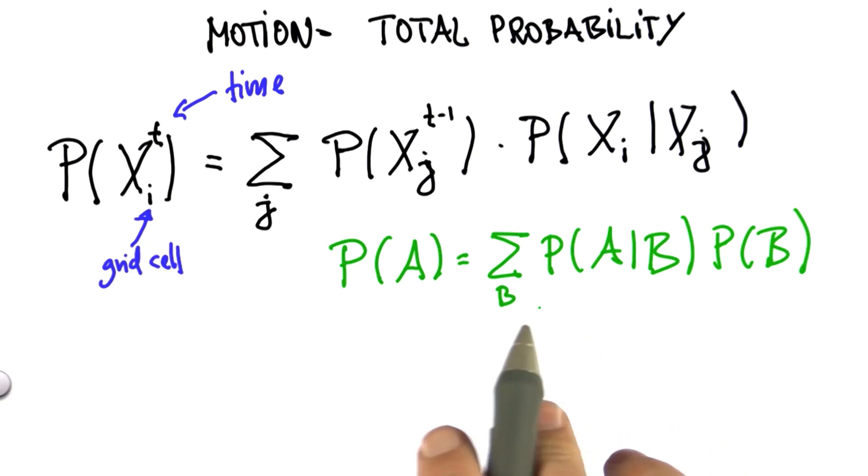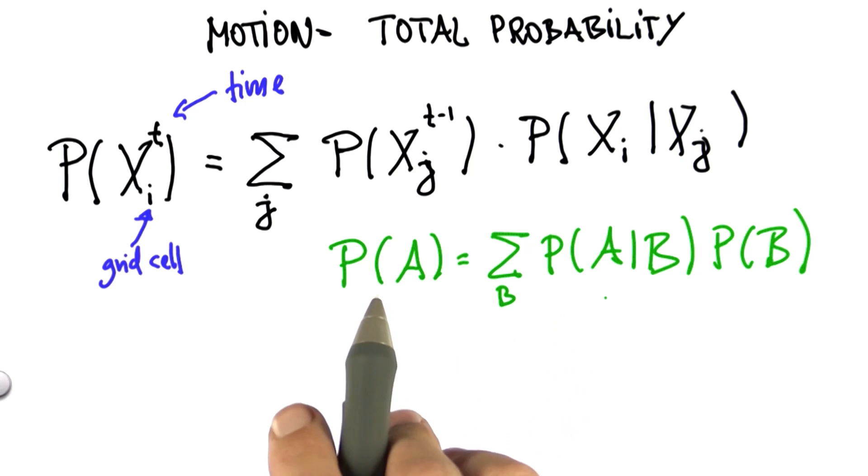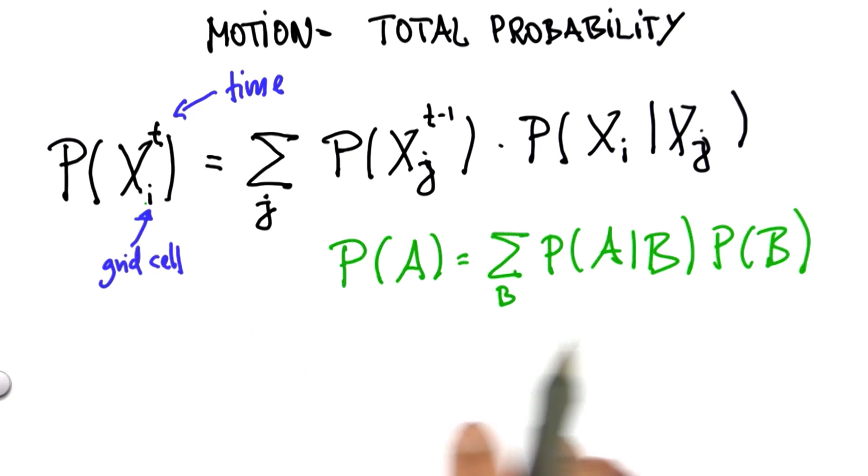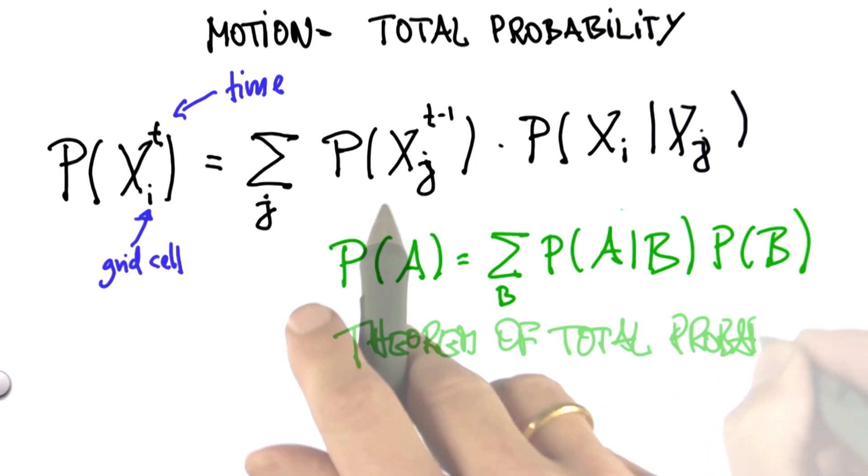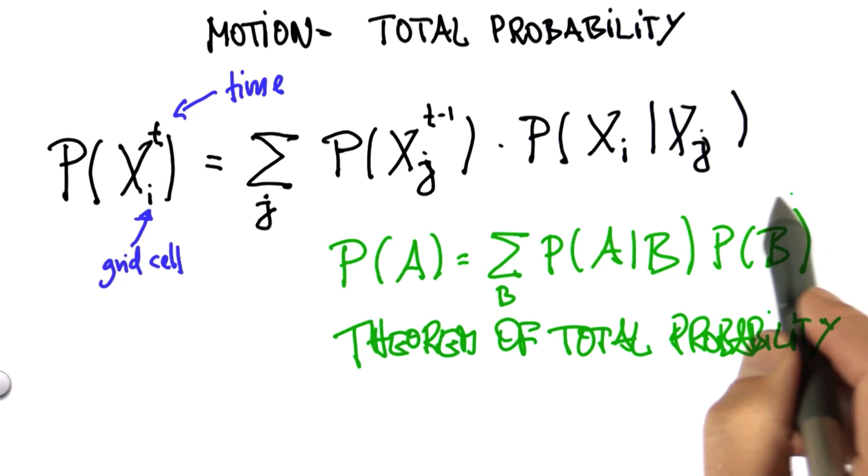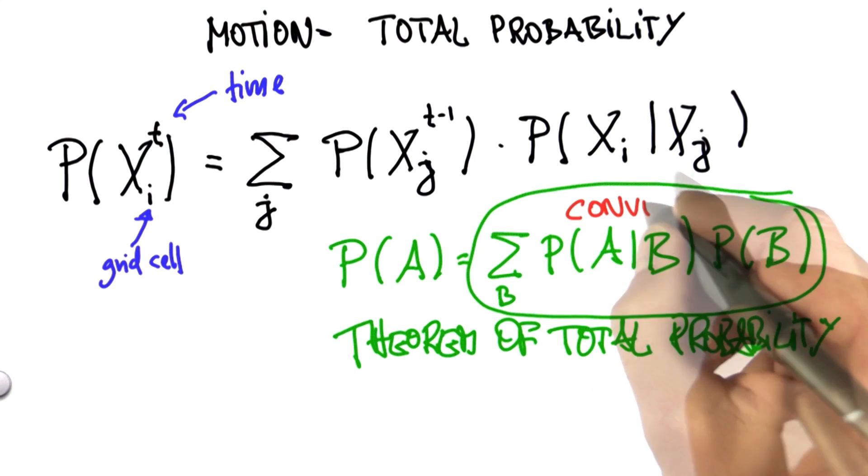And you can see directly the correspondence of a as a place i at time t, and all the different b's as the possible prior locations. That is often called the theorem of total probability. And the operation of a weighted sum over other variables is often called a convolution.